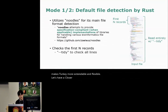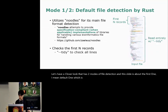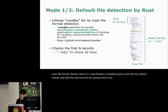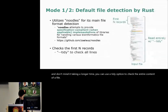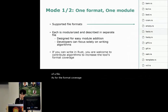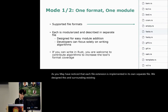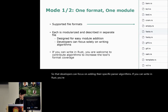Let's have a closer look. Tazaki has two modes of file detection. This slide is about the first, the default one, which is implemented in Rust. Tazaki utilizes a library called noodles as a main file format checker, which is a specification-compliant parser. By default, Tazaki checks only the first N records for saving time. If you want to perform a more thorough format check and don't mind it taking longer, you can use a tidy option to check the entire content of a file. As for format coverage, it supports major bioinformatics formats. Each file extension is implemented in its own separate file — we designed this ecosystem for easy module addition, so developers can focus on adding their specific parser algorithms. If you can write in Rust, you're welcome to contribute algorithms to increase tool format coverage.